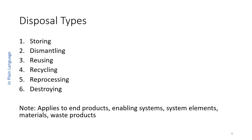There are six disposal types discussed in the System Engineering Handbook: storing things that are disposed, dismantling them, reusing them where opportunities exist, recycling for other purposes, reprocessing, and finally destroying. This applies to all end products, enabling systems, and system elements during any of the phases of development, operation, maintenance, and retirement.